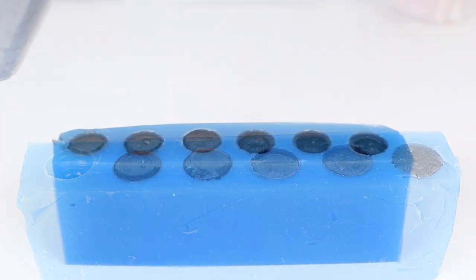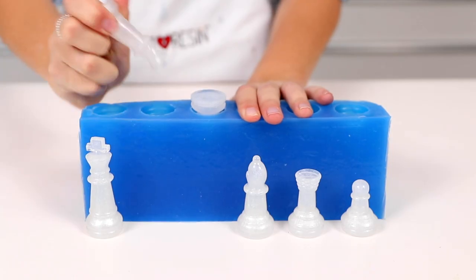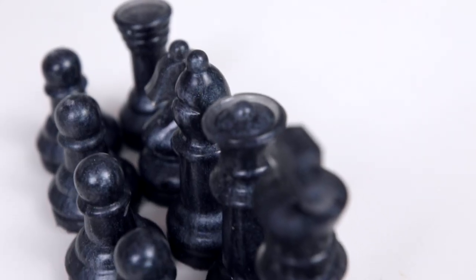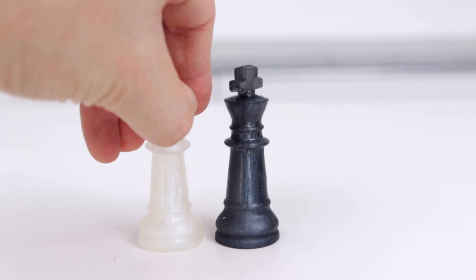Art resin is hard to the touch after 24 hours but a full hardened cure will take 72. Remove the pieces one at a time and voila! Your very own set of chess pieces to wow your opponents with. Check and mate.